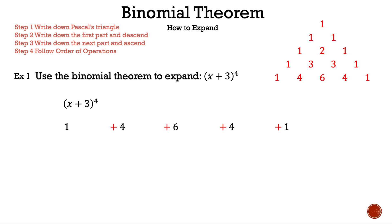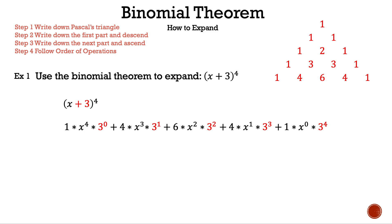It doesn't mean it will stay as an addition sign — that depends on the variables and numbers in the parentheses. We're going to put two multiplication signs for each term because we have two terms in the parentheses. For the a term, in this case x: x to the 4th, then x cubed, then x squared, then x to the 1st, then x to the 0. That follows property 2 because our exponents descended. For the b term, in this case 3: 3 to the 0, 3 to the 1st, 3 squared, 3 cubed, 3 to the 4th. That follows property 2 because our exponents ascended.